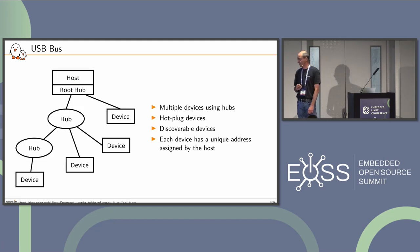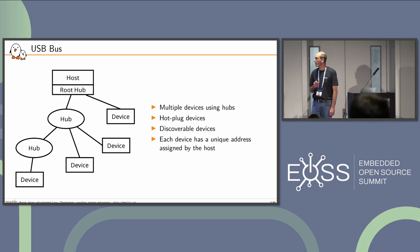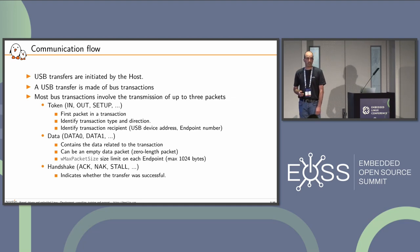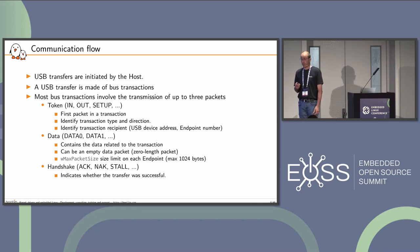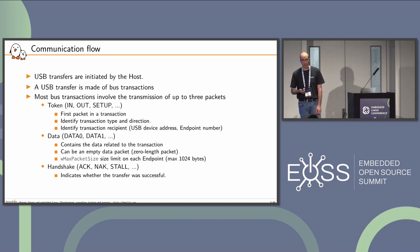On the USB bus, we have a host with its root hub, and we can have multiple devices using some hubs. Devices are pluggable and discoverable on the USB. Each device has a uniquely assigned address to communicate with. Communication flow, or USB transfers, are initiated by the host. Most bus transactions involve up to three packets. The first, the token packet, identifies the transaction and its recipient using the USB device address and endpoint number.